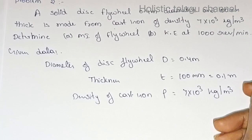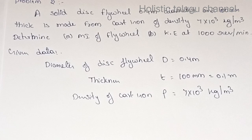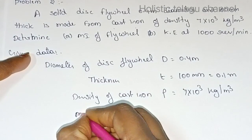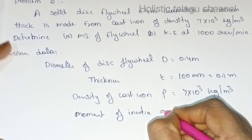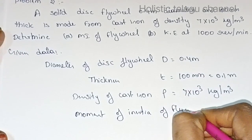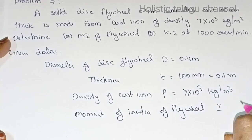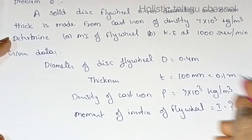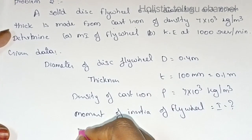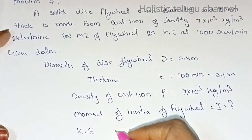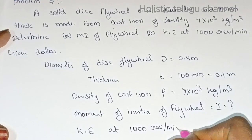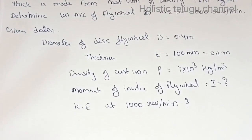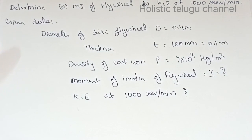We need to find: moment of inertia of the flywheel, and speed equals 1000 revolutions per minute. Given data is complete. Now we will do the solution.